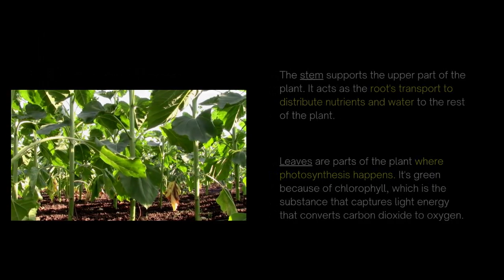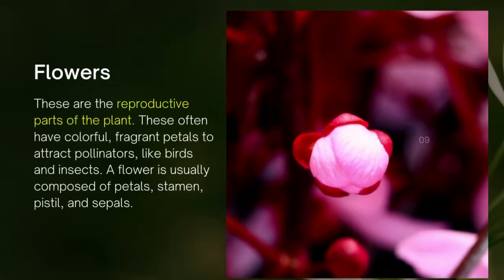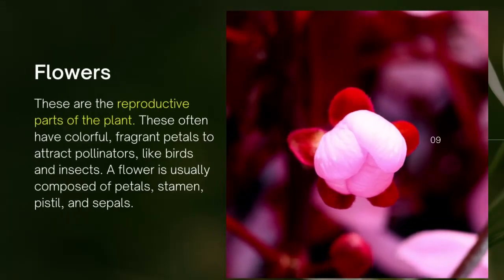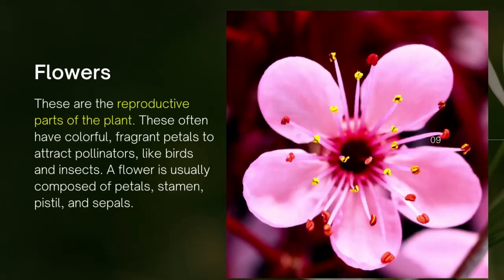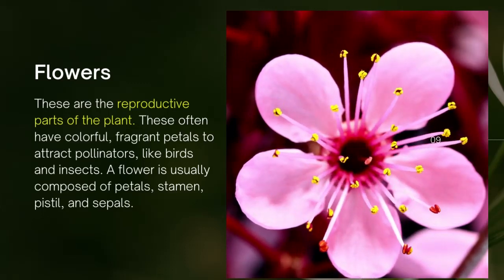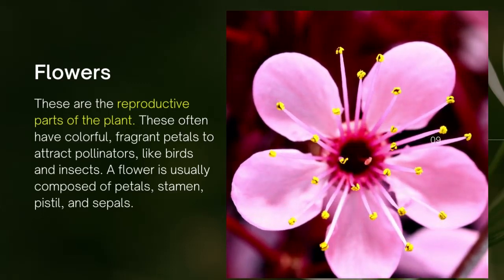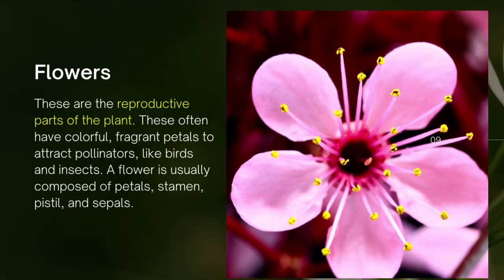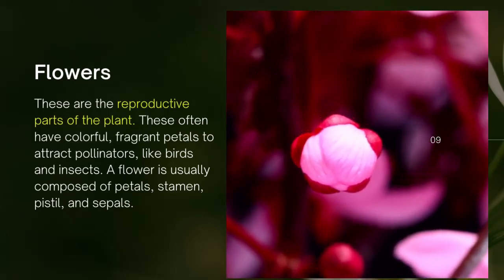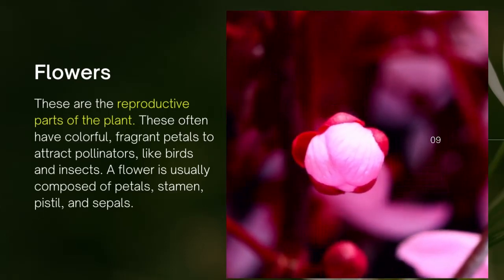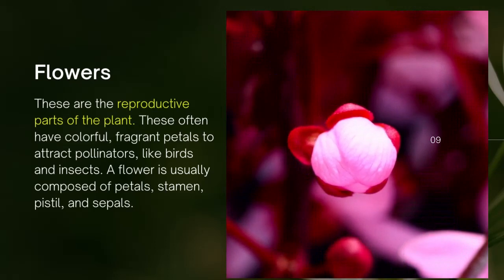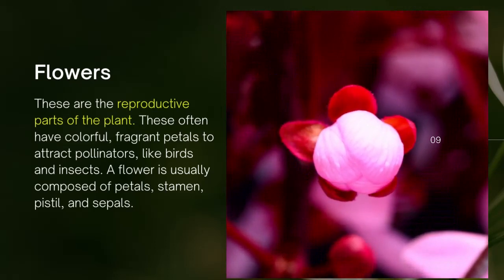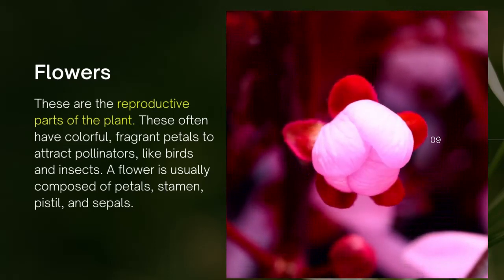The flowers are the reproductive part of the plant. These often have colourful, fragrant petals to attract pollinators like birds and insects. A flower is usually composed of petals, stamen, pistil, and sepals, which are the inside parts of the plant.